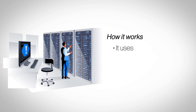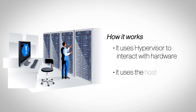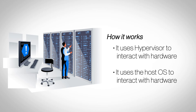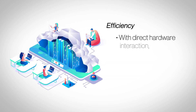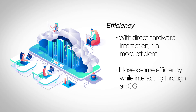In hardware virtualization, the hypervisor sits directly over the server's hardware and creates multiple virtual servers, each with its own OS and applications. In software virtualization, the virtualization happens in the host OS, but each virtual server has its separate OS. Hardware virtualization is much more efficient of the two, since software virtualization uses the host OS to interact with resources, sacrificing some efficiency in the process.